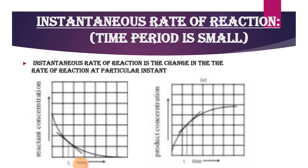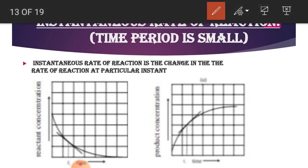The second type of rate of reaction is your instantaneous rate of reaction. Here we find the rate of reaction for a time period that is small. Instantaneous means at a particular instant. Instantaneous rate of reaction is the change in the rate of reaction at a particular instant. We are going to find the change in the rate of reaction at a particular instant. Here we are seeing two graphs: the first one is the graph for reactant concentration versus time.